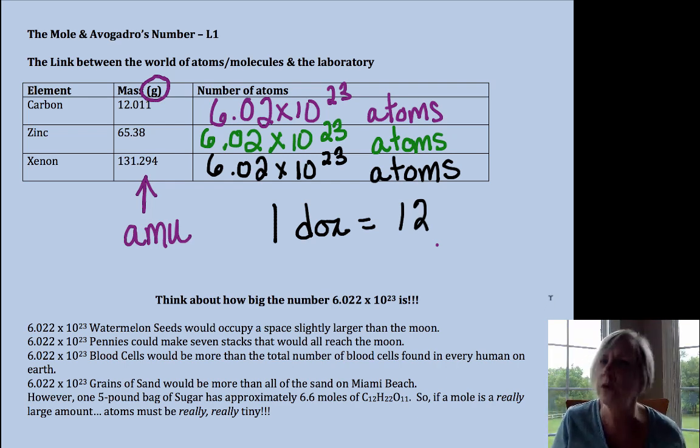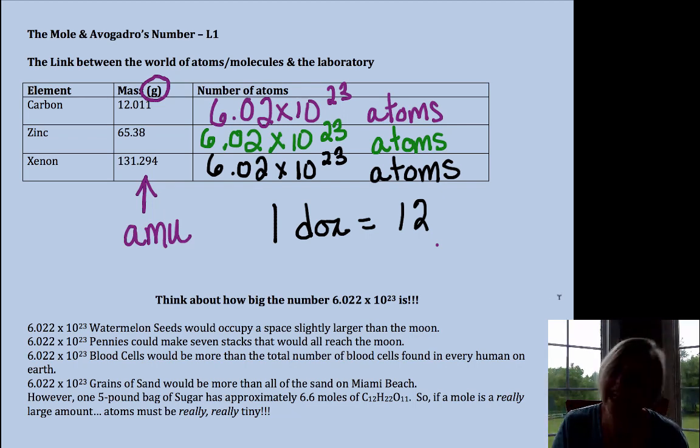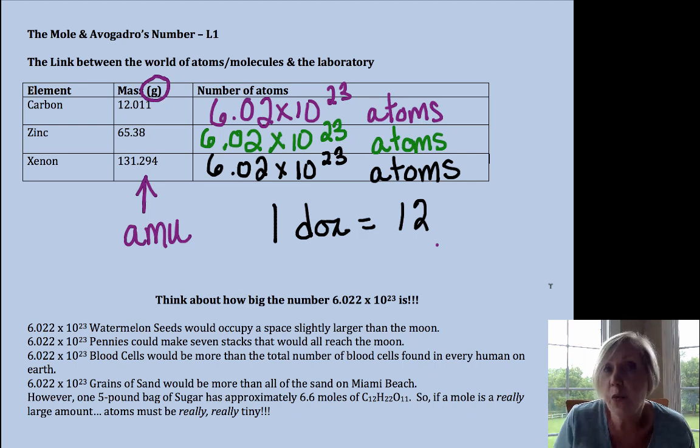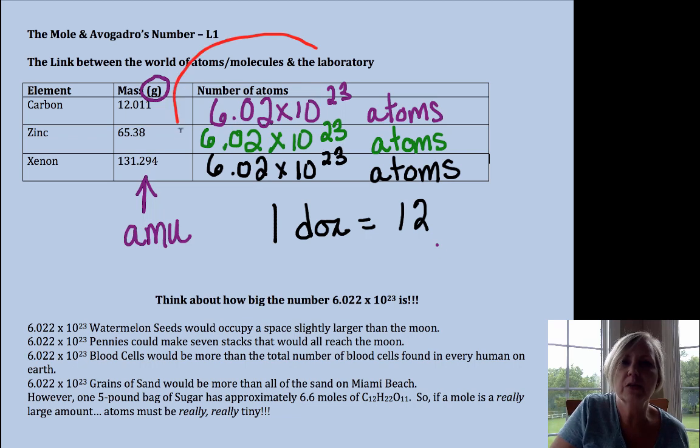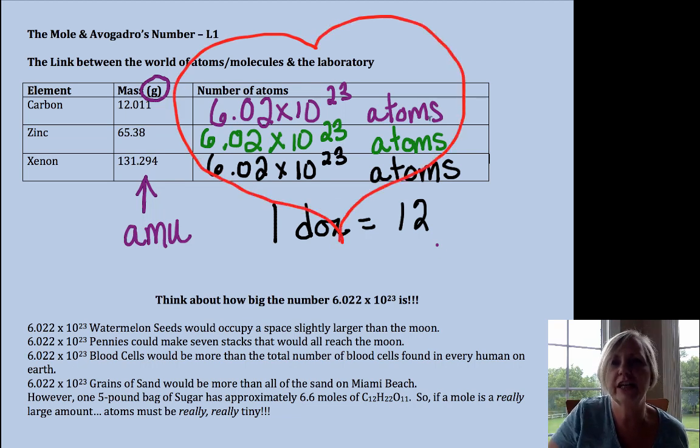If we have a dozen cookies, we have 12 cookies. If we have a dozen students, we have 12 students. A dozen pieces of candy, well you get the idea. A dozen is 12 and it's a convenient way to represent a number that we use on a regular basis. Well that's what we're going to do for this number here. Avogadro came up with this number, and that number is what I like to call the heart of chemistry. And it's called the mole.